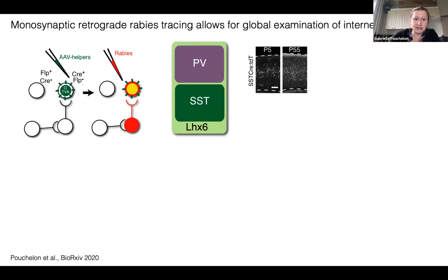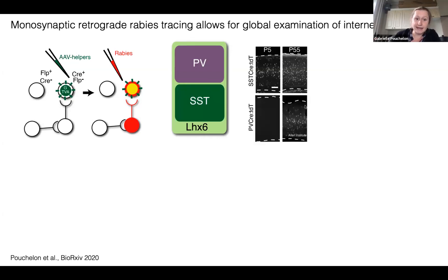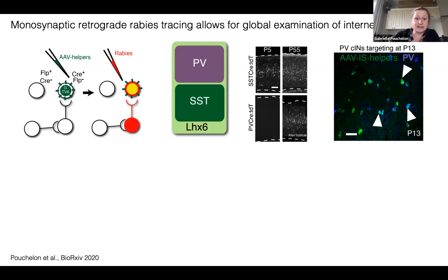For SST, we used SST-Cre, which allows for recombination of the helpers at early stages as well as in adults. However, for PV this was more complicated because PV-Cre only allows recombination late. To target early PV circuits, we designed an intersectional strategy in which we recombined the helpers into the progenitors of both populations with Lhx6-Cre, then removed the helpers from SST using SST-Flp recombinase, allowing only expression in pre-PV cells. This worked nicely, allowing exact co-localization with parvalbumin later on.